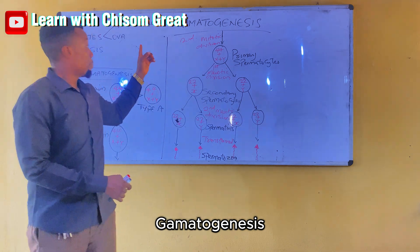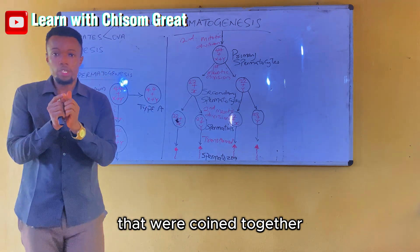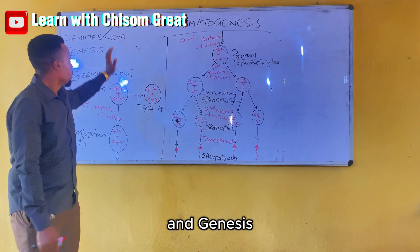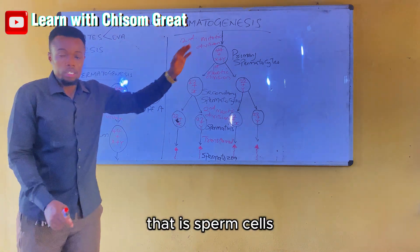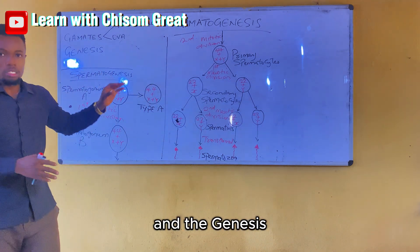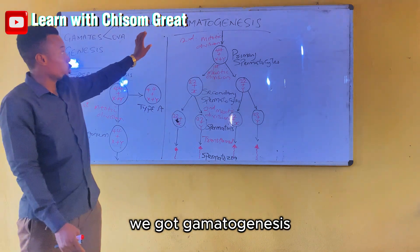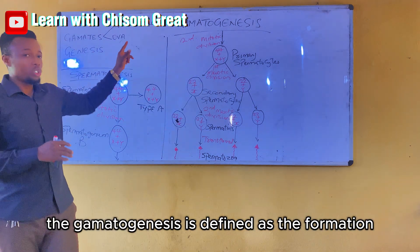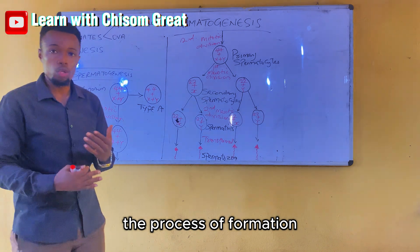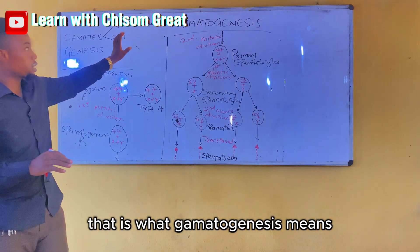Gametogenesis is derived from two words coined together: the gametes and genesis. The gametes simply means reproductive cells — that is, sperm cells and the ova, or the oocytes. Genesis means the beginning. So, Gametogenesis is defined as the formation of the reproductive cells — the process of formation of the sperm cell and the process of formation of the ova or oocytes.